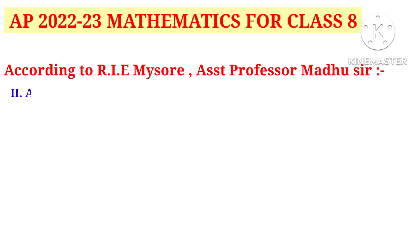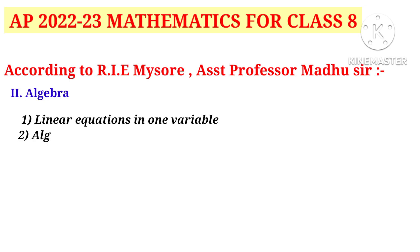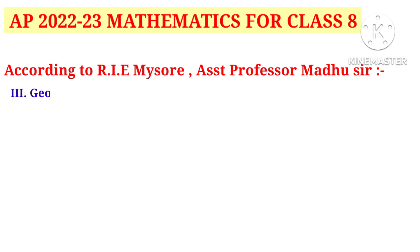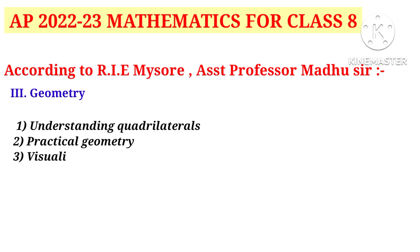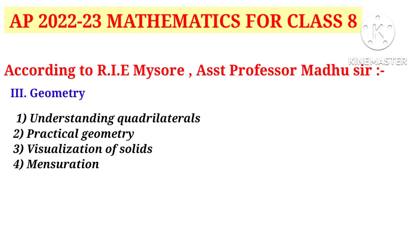In algebra, the chapters are: Number 1, Linear Equations in One Variable; and Number 2, Algebraic Expressions and Identities. In geometry, the chapters are: Number 1, Understanding Quadrilaterals; Number 2, Practical Geometry; Number 3, Visualization of Solids; and Number 4, Mensuration.